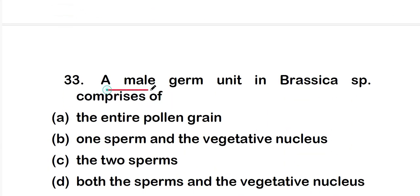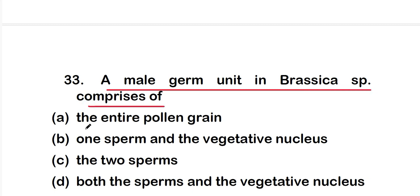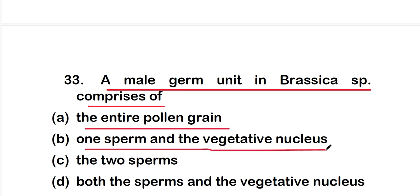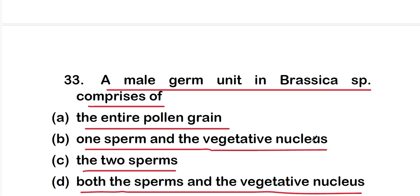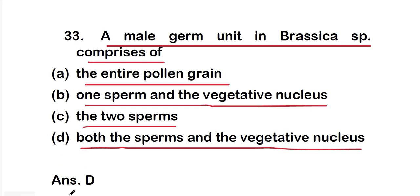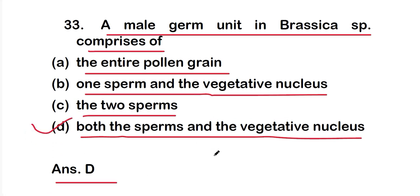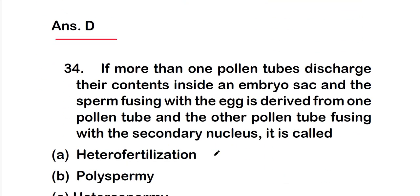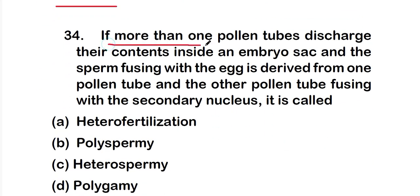Question 33: the male germ unit in Brassica species comprises option A: the entire pollen grain; option B: one sperm and the vegetative nucleus; option C: the two sperms; or option D: both the sperms and the vegetative nucleus. The right answer is option D — both the sperms and the vegetative nucleus are present in the male germ unit of Brassica.